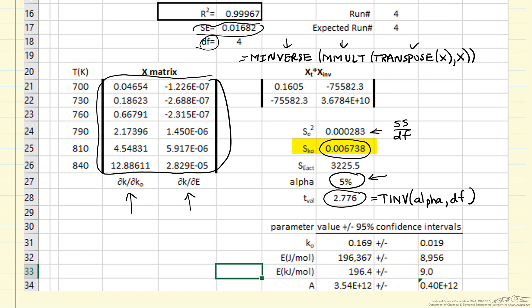This term SK0, it's the square root of SE squared times the 1,1 element of this matrix. In this case, 0.1605. We have this term, again, the square root SE squared times the 2,2 element in the matrix. Once we have those, we can calculate, and we've done that down here, the confidence intervals. This confidence interval is the T value times SK0. This is the T value times S activation.